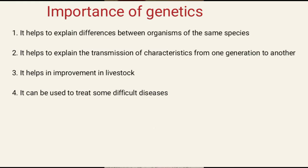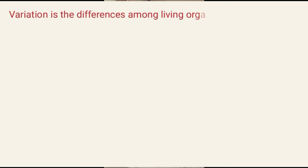Number 3, it helps in improvement of livestock. Number 4, it can be used to treat some difficult diseases. From there, we need to know the definition of variation. Variation is the differences among living organisms. The differences that occur among living organisms is what we call variation.